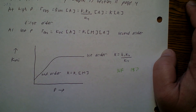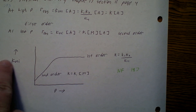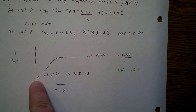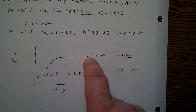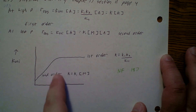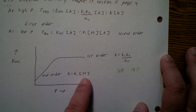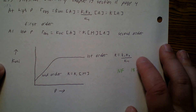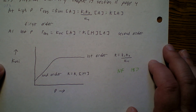So here's a graph of how it might look versus pressure. This is K_uni. Down here at lower pressure, it'll seem second order, and then at higher pressure, it'll seem first order. So down here the observed K is going to be equal to K1·[M], but up here the observed K will just be K1·K2 / K₋1.